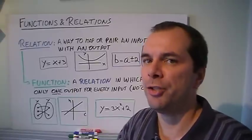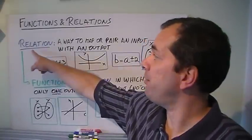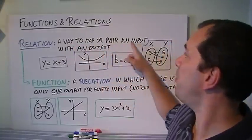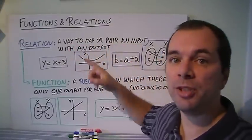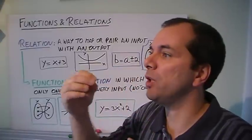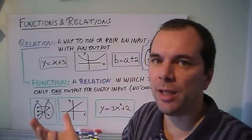Let's talk about functions and relations. Let's start with relations. A relation is a way to map or pair an input with an output. Just any way that you give me an input and I have a rule to give you an output, that's a relation.